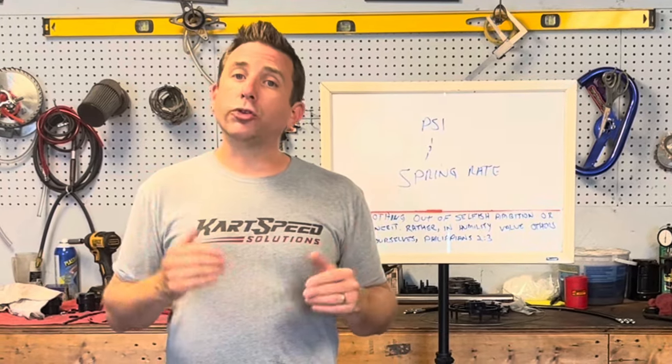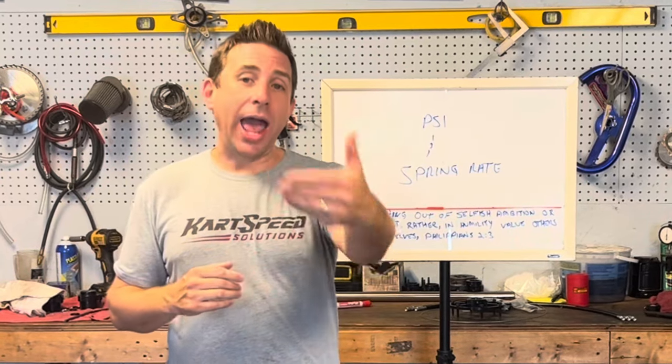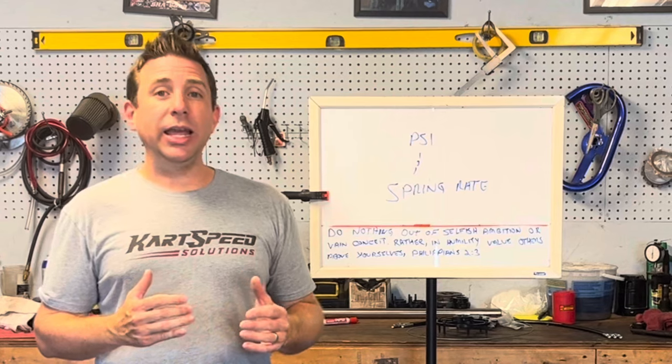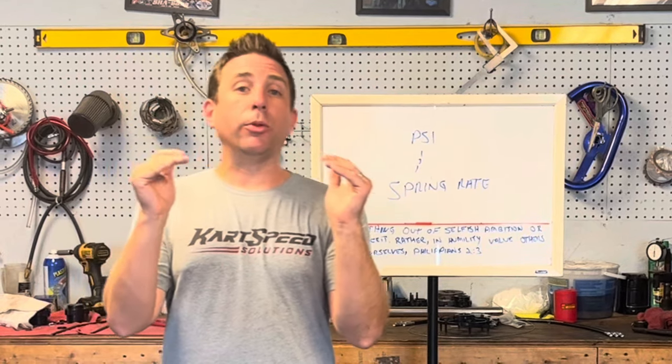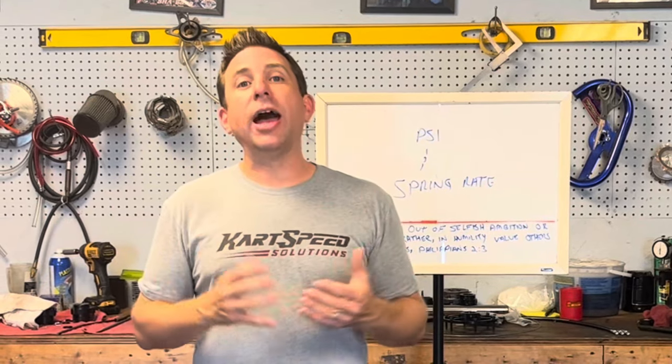Lower tire pressure does the opposite — it lowers the spring rate in the sidewall, causing the sidewall to give and flex, and will add side bite or grip to your tire. So in low grip situations you go down in tire pressure because it causes the sidewall to bend, since the spring rate is lower.